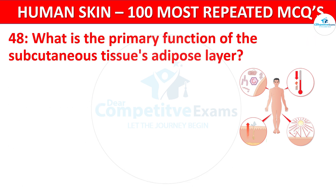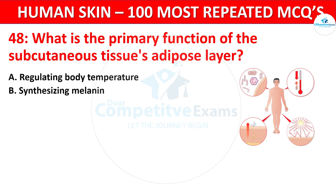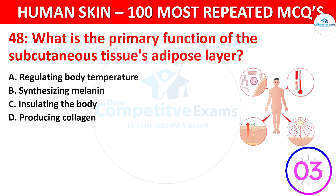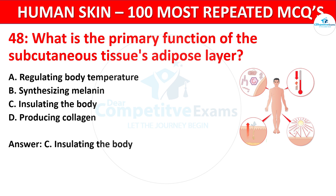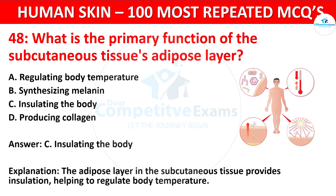Question 48. What is the primary function of the subcutaneous tissue's adipose layer? Your options: Regulating body temperature, Synthesizing melanin, Insulating the body, or Producing collagen. The correct answer is Insulating the body. The adipose layer in the subcutaneous tissue provides insulation, helping to regulate body temperature.